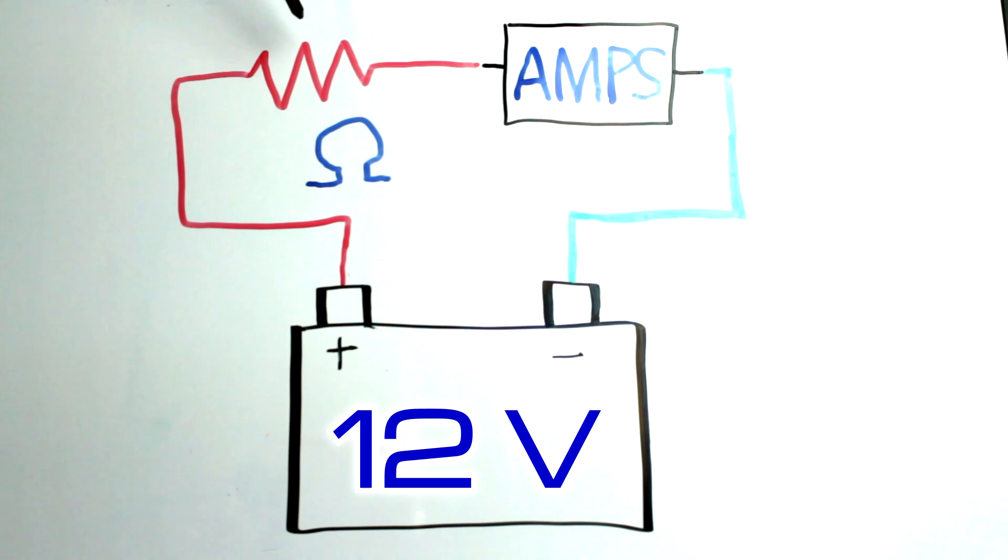This is a symbol for a resistor. It resists the push of the voltage coming through the circuit. This is the symbol for Ohm's. Resistance is measured in Ohm's.